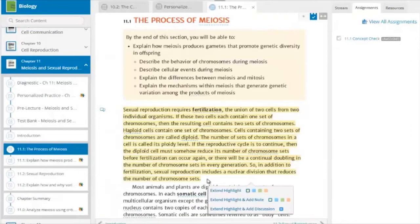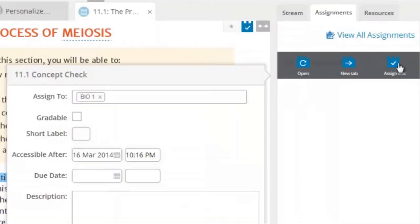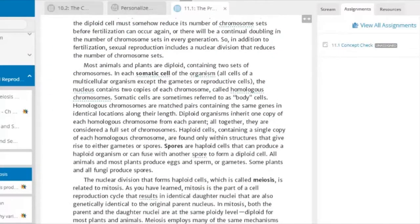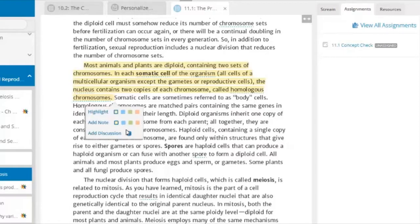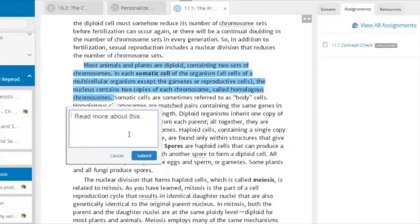Instructors can customize the e-textbook by selecting specific sections, images, figures, or media resources to assign to students. Instructors can start their own discussion questions for students directly in the e-textbook and participate as students provide their responses. If you notice that most students are struggling on a certain topic, you can quickly assign it as a reading activity or ask a question so students can go back and review and reflect on the materials.